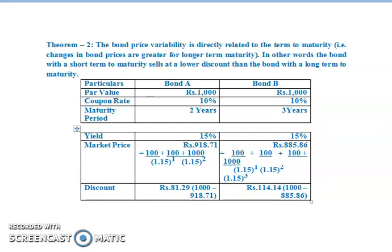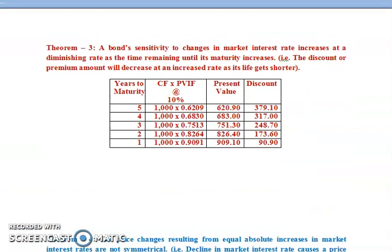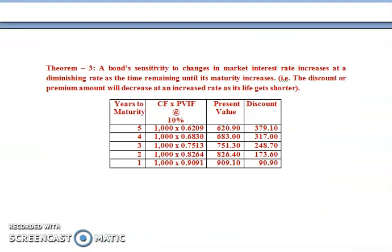Let us now understand theorem 3. Theorem 3: a bond's sensitivity to changes in market interest rate increases at a diminishing rate as the time remaining until its maturity increases. That is, the discount or premium amount will decrease at an increased rate as its life gets shorter. We can understand this theorem by analyzing this table.